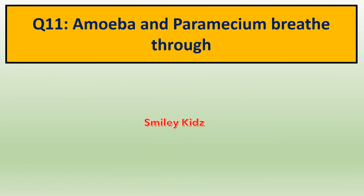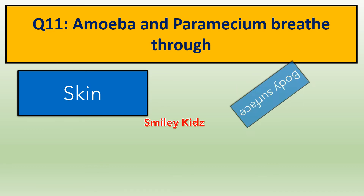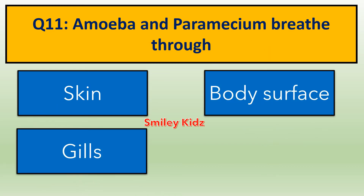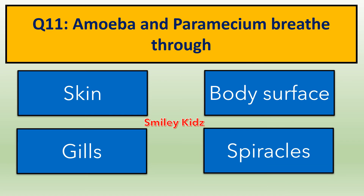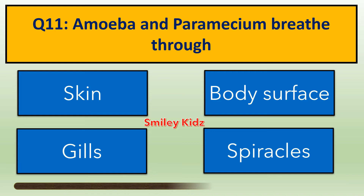Question number 11. Amoeba and Paramecium breathe through — options are: A. Skin, B. Body surface, C. Gills, D. Spiracles. Your time starts now. Amoeba and Paramecium breathe through their body surface.